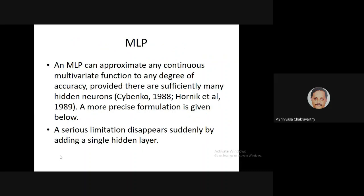Now let us make a more general statement. There are several so-called approximation theorems proposed to establish the capabilities of MLPs. One by Cybenko, Hornik et al. states that an MLP can approximate any continuous multivariate function to any degree of accuracy, provided there are sufficiently many hidden neurons. If I take an MLP with a single hidden layer and want to approximate some function, the input vector x is a vector and the output can be multivariate.